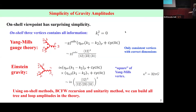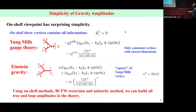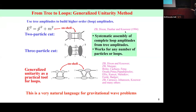There's all the different techniques — the BCFW recursion, the unitarity method, which I'll speak about because we use it in the gravitational wave problem. Using that, from this starting point, you can build the entire perturbative theory to all loop orders.